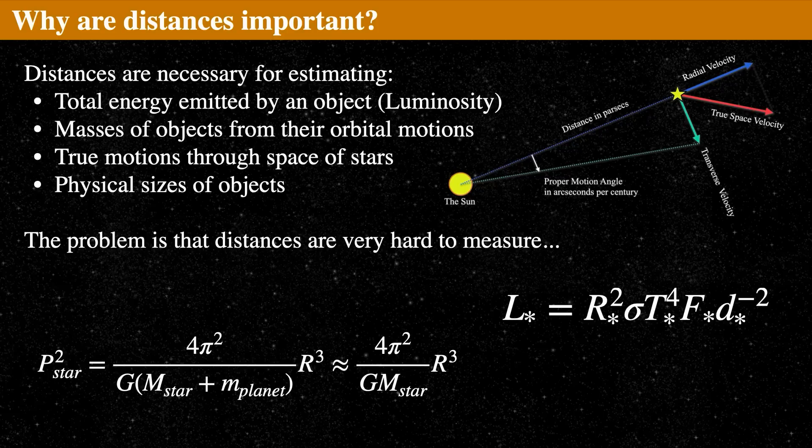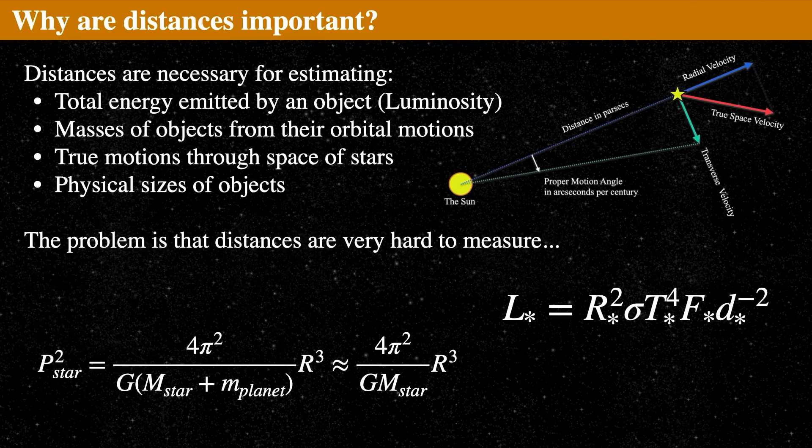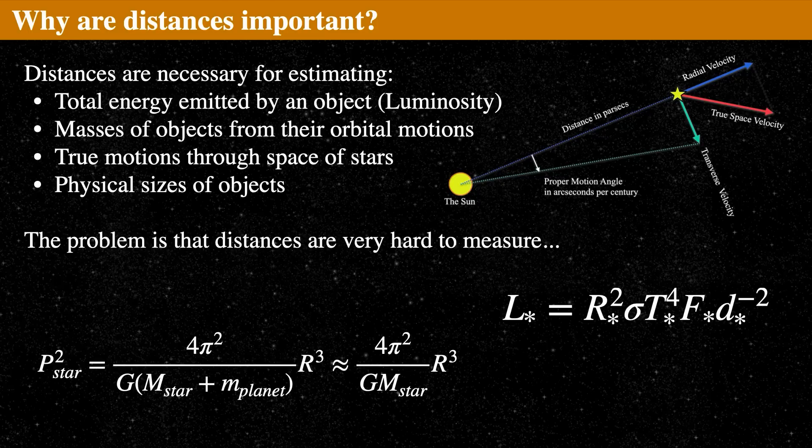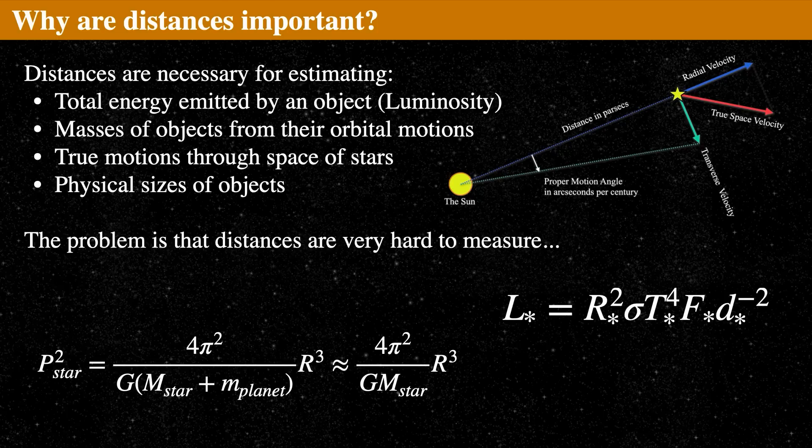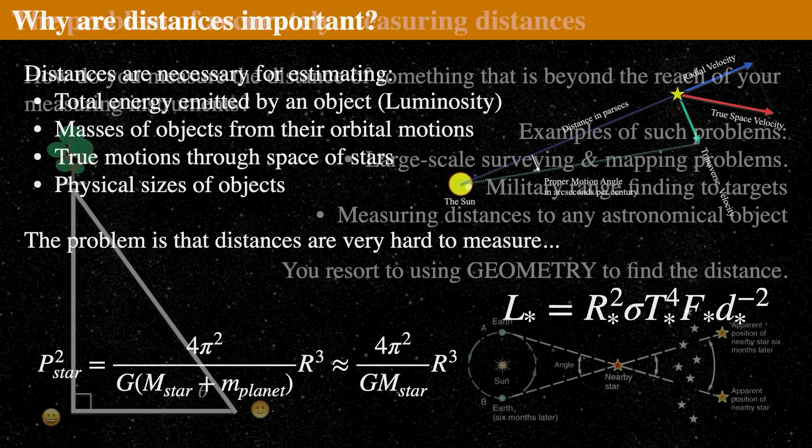Distances in astronomy are both extremely important and really hard to get. Why are they important? Because if we can get the distances to stars, then we can learn more about them, such as their physical size or their luminosity, how bright they are. We can determine their masses indirectly and then we can also determine their true motion through space.